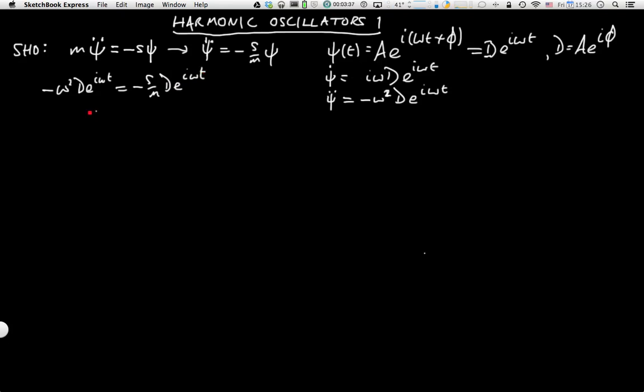For this equation to be satisfied, this is true if ω² is s over m, and normally we write ω₀ equals the square root of s over m. We choose ω₀ because that is the frequency at which the oscillator will respond, that's its innate natural frequency.